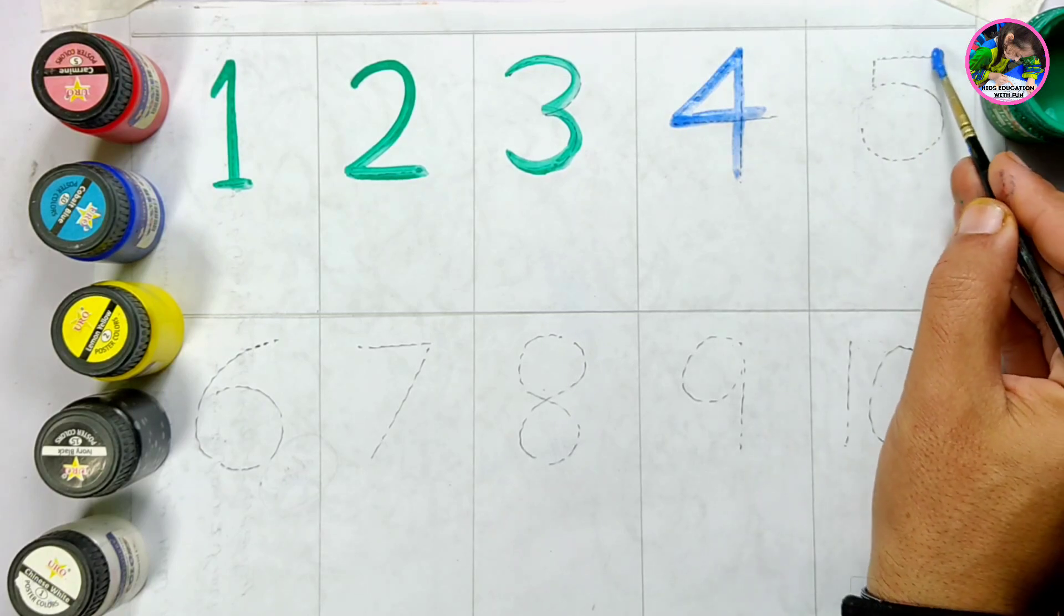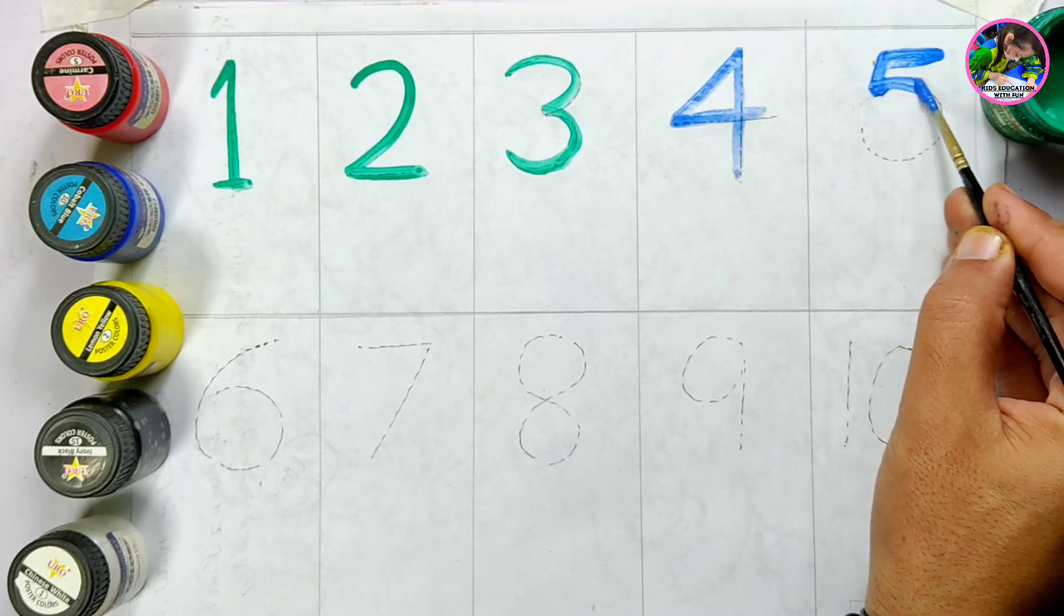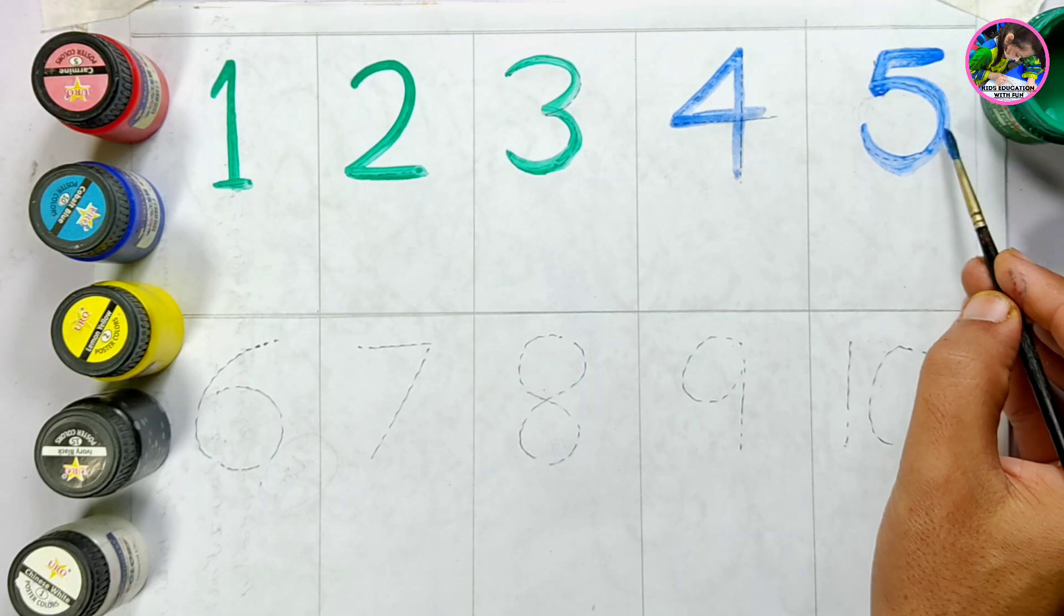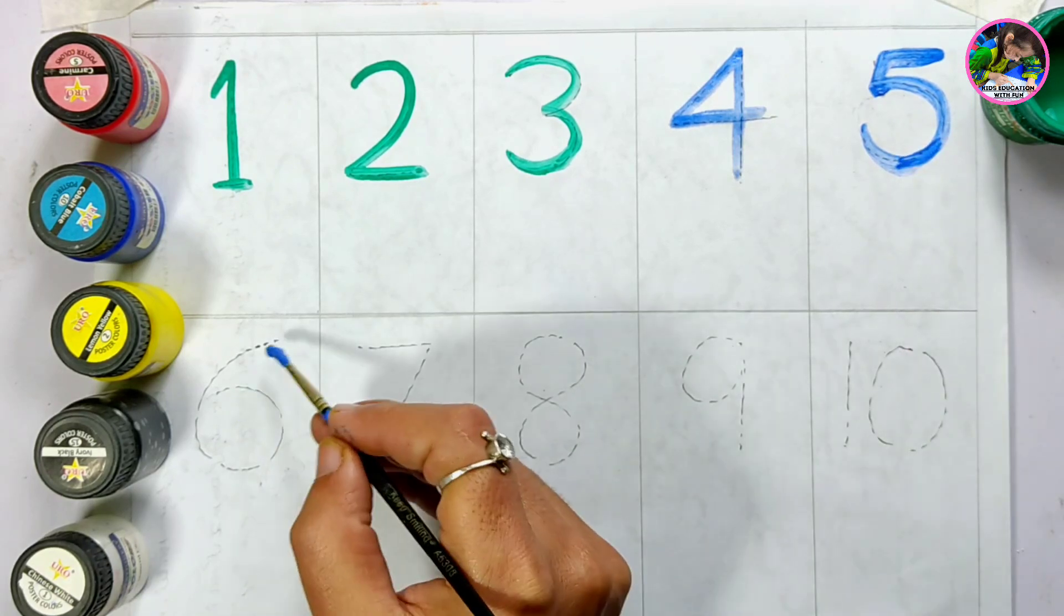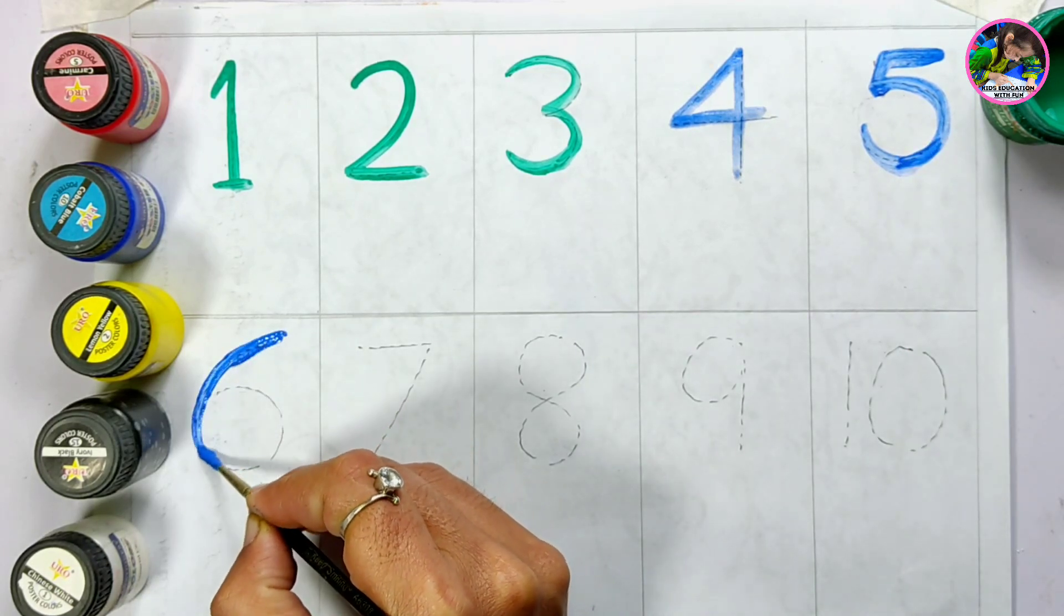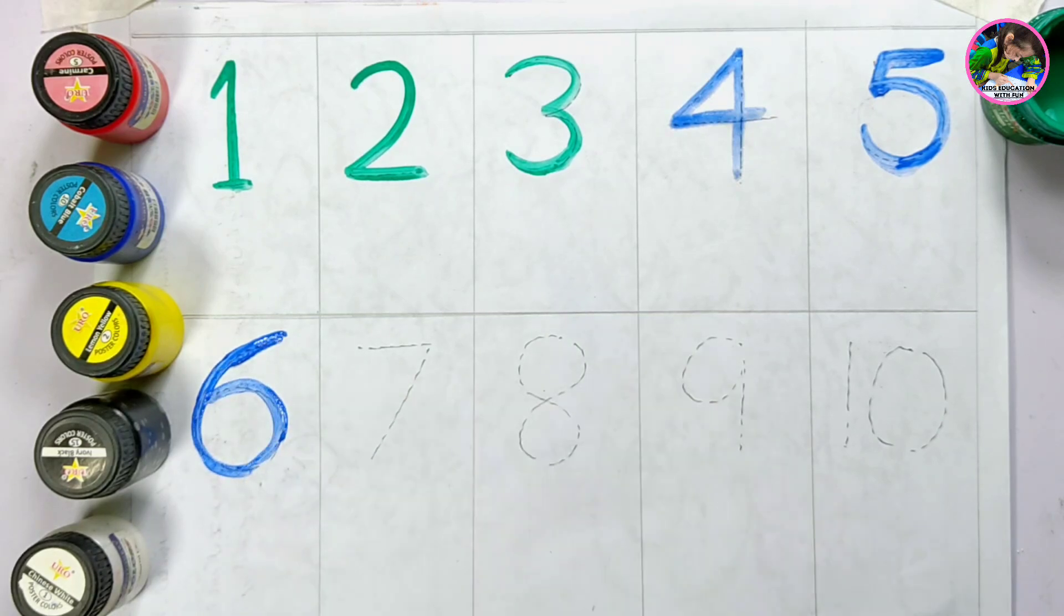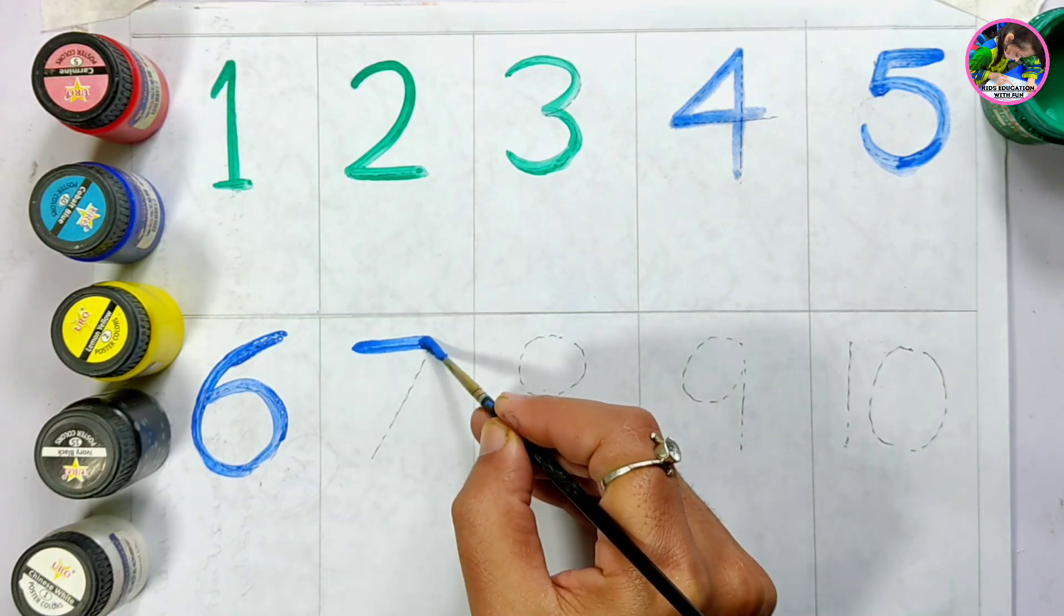And here is number five, number five. Are you doing the same practice? Next is number six, then number seven.